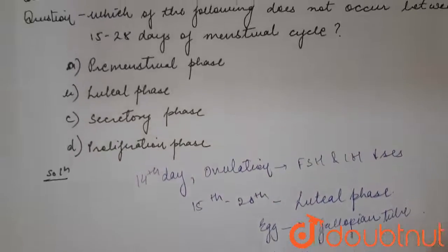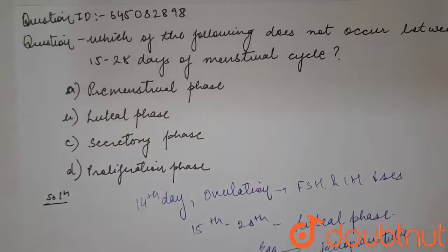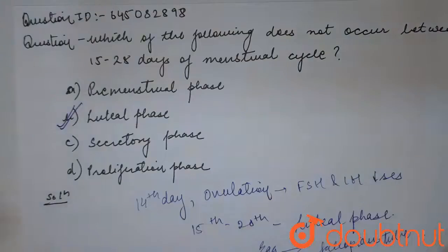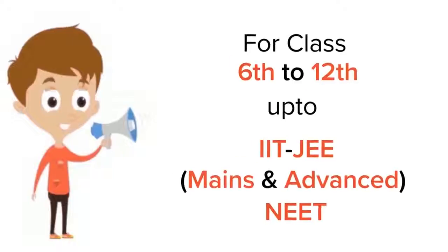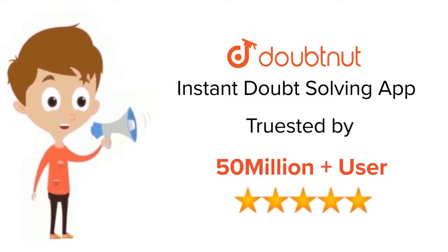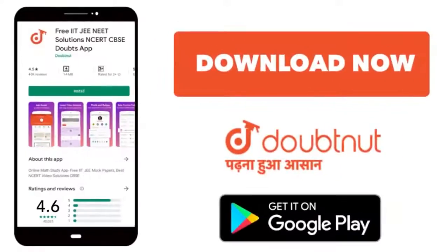So our answer to the question would be option B, luteal phase. The answer is option B, luteal phase. For class 6th to 12th, IIT JEE and NEET level, trusted by more than 5 crore students — download the DoubtNut app today.